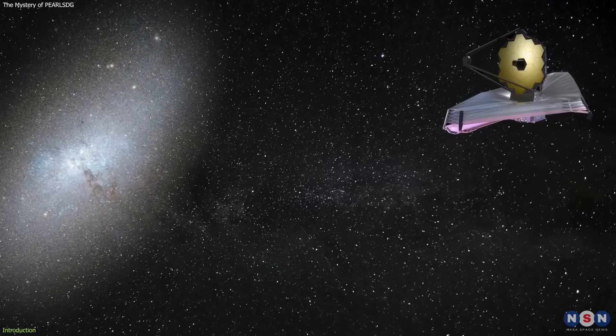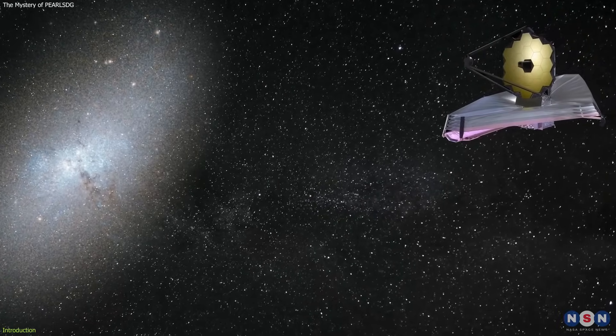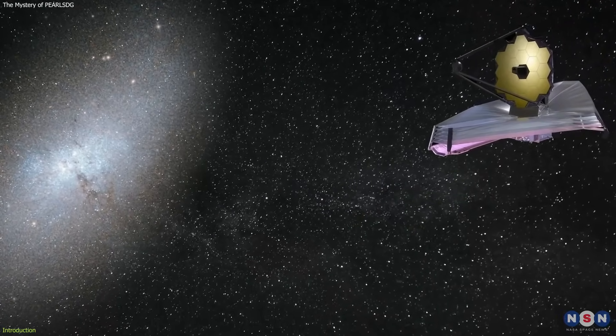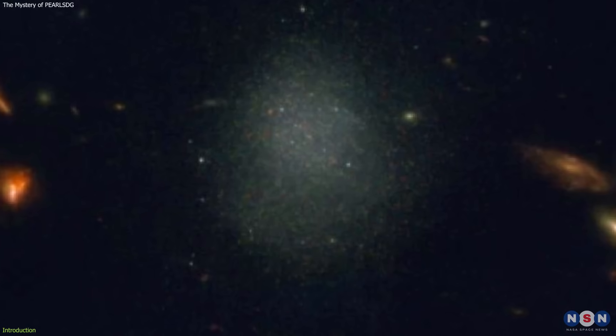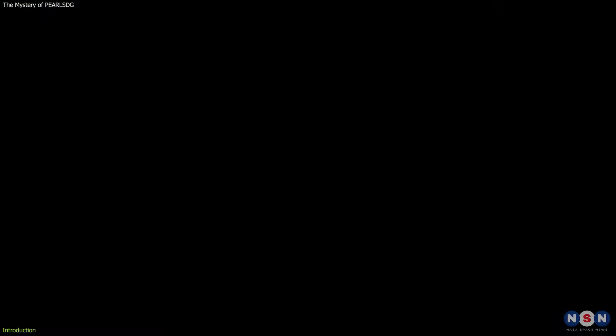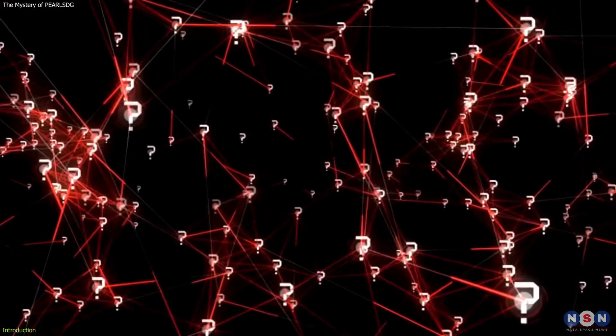How did JWST discover this galaxy that shouldn't exist? Why is it so important? And what does it tell us about the early universe and the formation of galaxies? How did it manage to survive for so long in such a harsh environment?